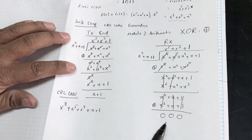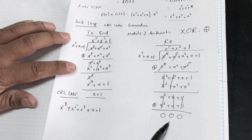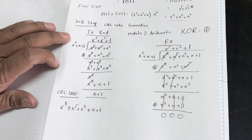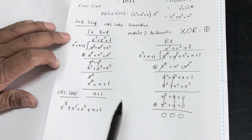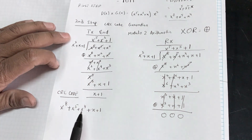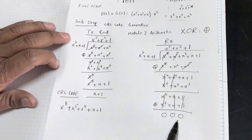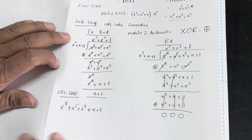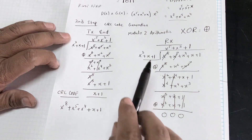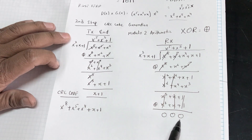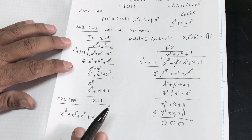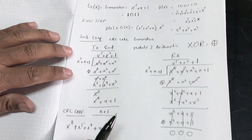When the receiver performs this long division and gets all zeros, it means there is no error in the transmission. If the receiver gets any non-zero remainder, it will ask the sender to resend that data again.